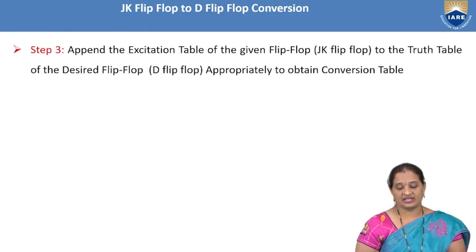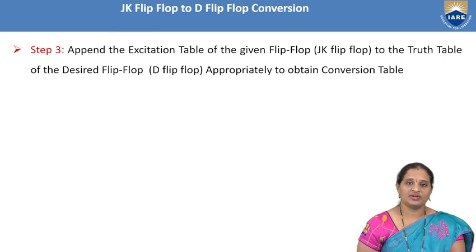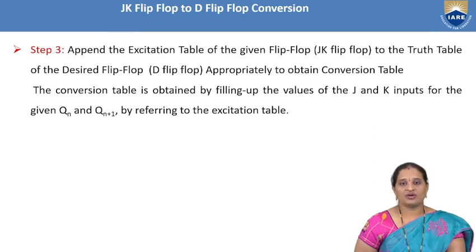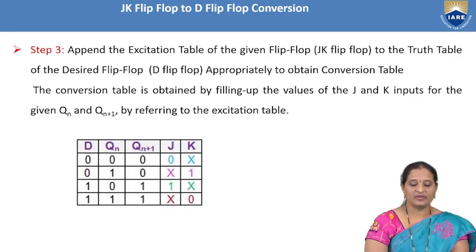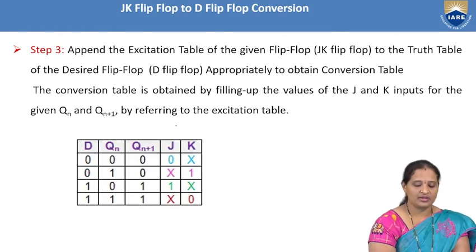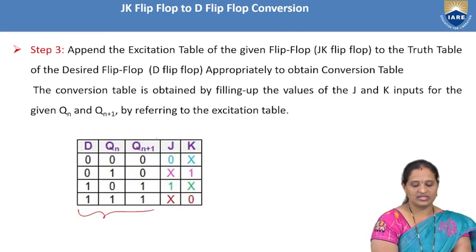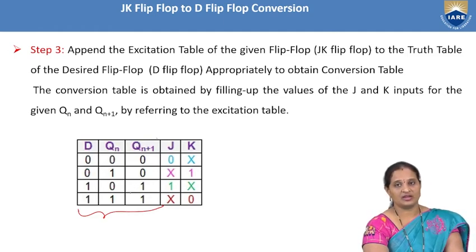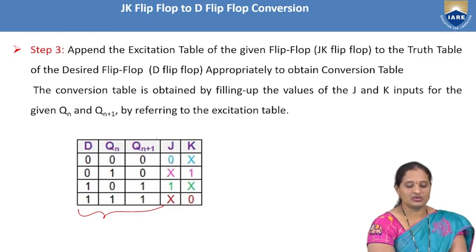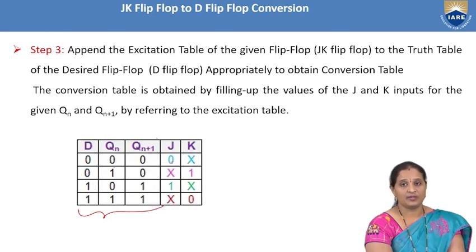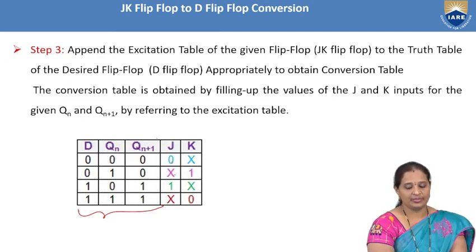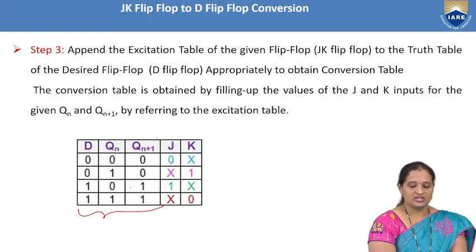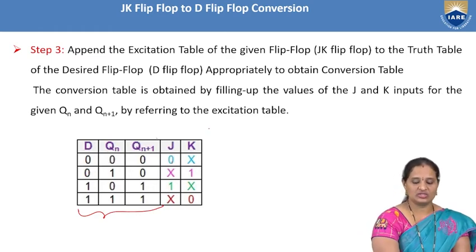Step 3: obtain the conversion table by appending the excitation table of the JK flip-flop to the truth table of the D flip-flop. The conversion table: D=0, QN=0, QN+1=0, J=0, K=don't care; D=0, QN=1, QN+1=0, J=don't care, K=1; D=1, QN=0, QN+1=1, J=1, K=don't care; D=1, QN=1, QN+1=1, J=don't care, K=0.